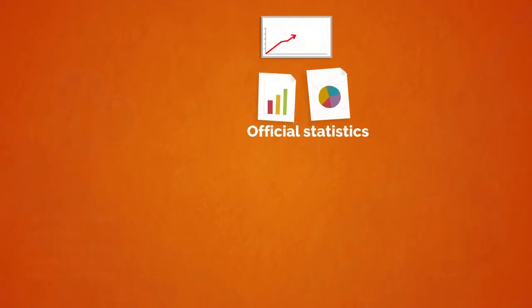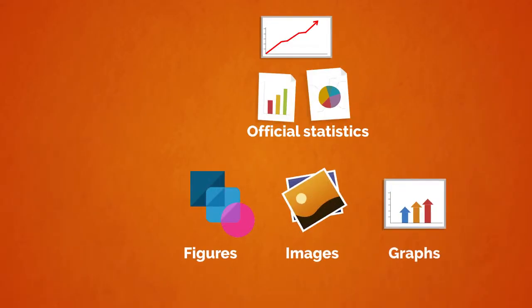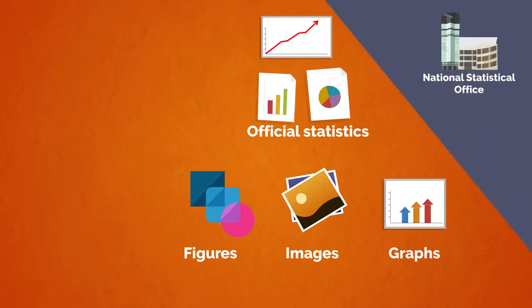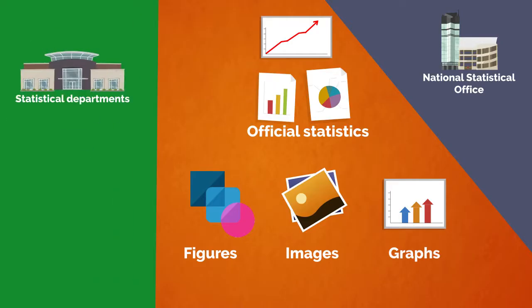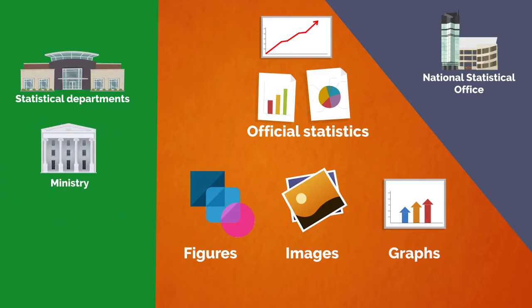Official statistics could be any type of data, figures, images, and graphs produced by a national statistical office as a core producer, or other national producers, including statistical departments of other organisations of the national executive branch, which are either part of the main administration, such as a ministry, or constitute a special national agency.